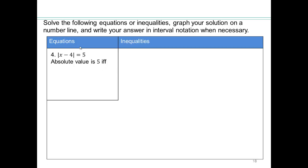So 5 is 5 units away from 0, and also negative 5 is 5 units away from 0. So x minus 4 has no choice but to be exactly equal to negative 5 or 5. And then add 4 to both sides, and you'll get negative 5 plus 4 is negative 1. 5 plus 4 is 9. So x equals negative 1 or 9 are solutions to this absolute value equation.